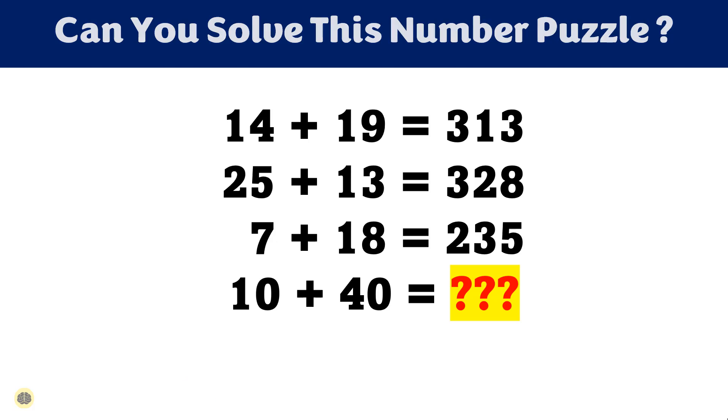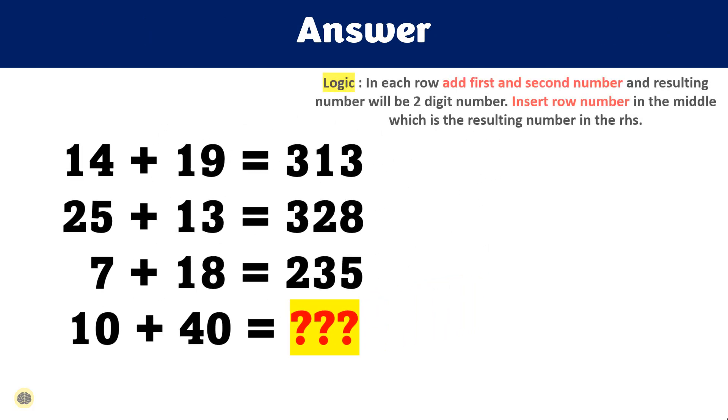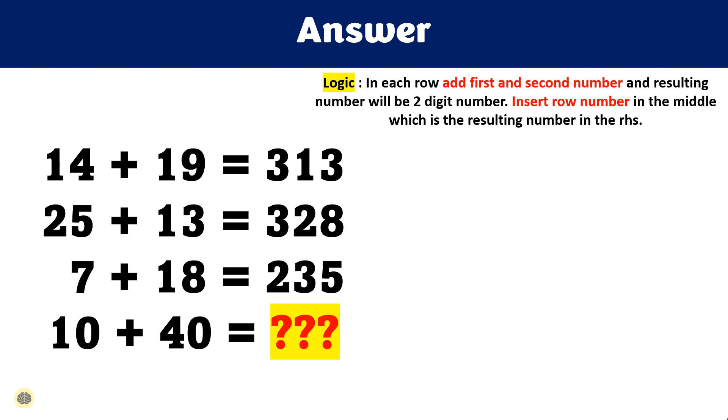Let me explain the solution now. Let's analyze the given pattern and find the value of 10 plus 40. So in this problem it is given that 14 plus 19 equals 313, 25 plus 13 equals 328, and 7 plus 18 equals 235.